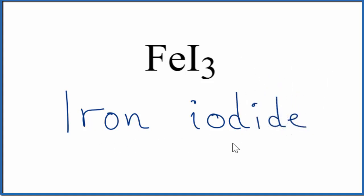So far, we have iron iodide as the name for FeI3. But remember, iron is a transition metal. We don't know the charge on iron since it's a transition metal, but iodine is always one minus. Since we have three of them, iron will have to be three plus to balance out that charge. So we're going to write Roman numeral III in parentheses between iron and iodide.